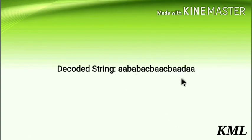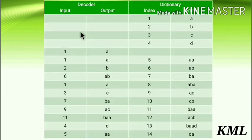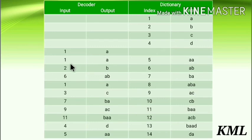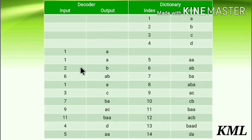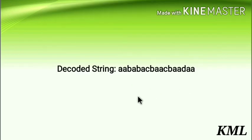To recap the steps: start with the initial condition, take the first input and write the string corresponding to it. Then take each next input, check if it is in the dictionary or not. If it is in the dictionary, enter prior_string plus first symbol of string of codeword, and output the string of codeword. Remember the two conditions — if and else — and follow these steps. I hope it was clear. If you have any doubts, ask in the comment section. Thank you for watching, keep learning.